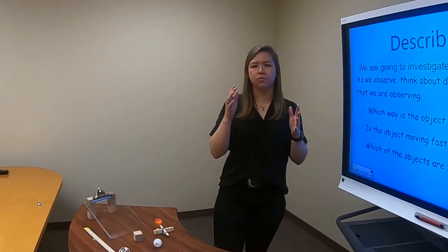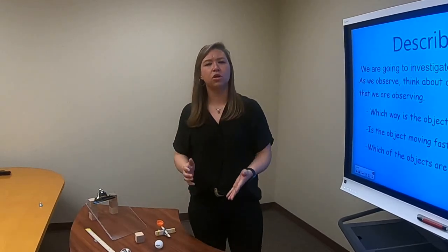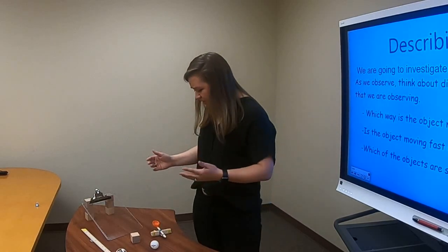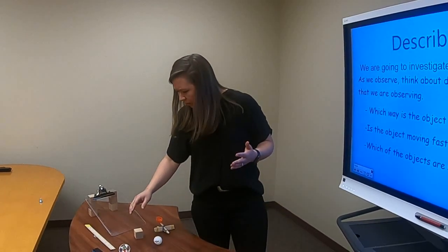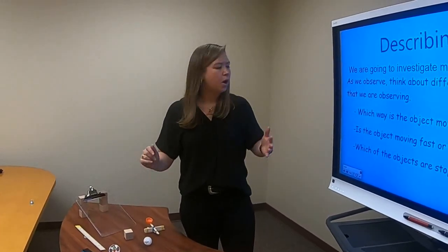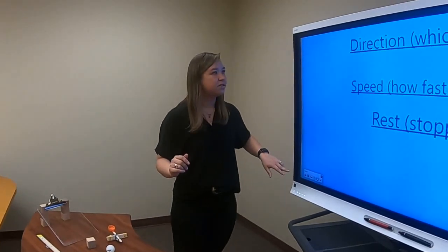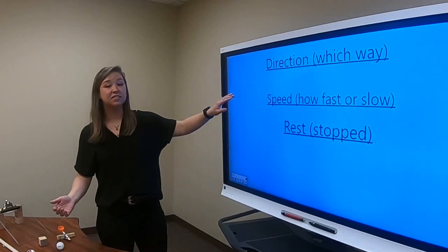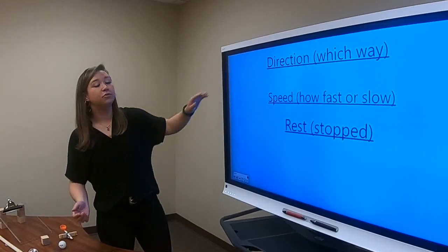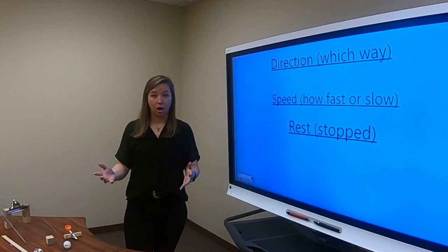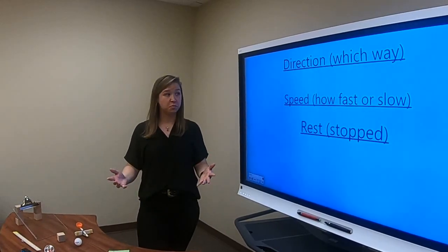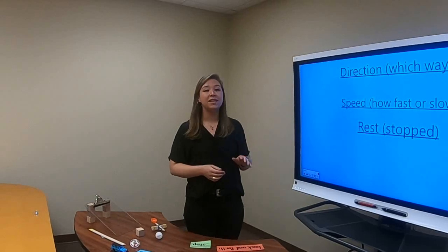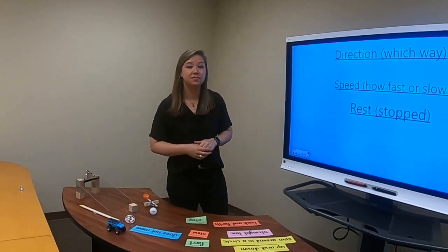So guys, we've been talking about which way it was going, how fast or slow it was going, and some things that didn't move, like our ramp didn't move. The ruler didn't move. But we've actually been describing some really scientific words like direction, speed, and rest. So direction is which way an object is going, how it's moving. Speed is how fast or slow it's moving. And rest is when something is stopped.